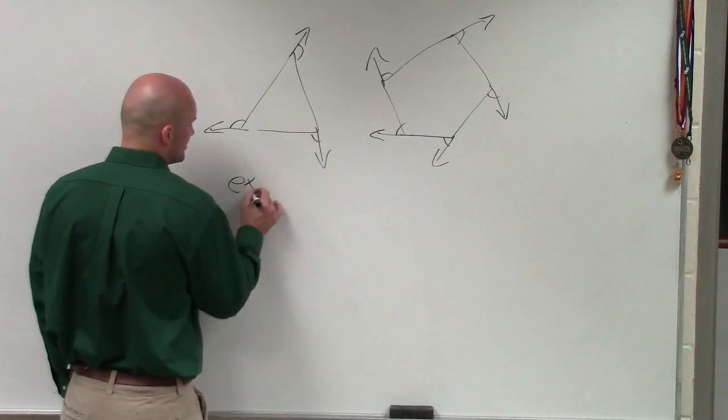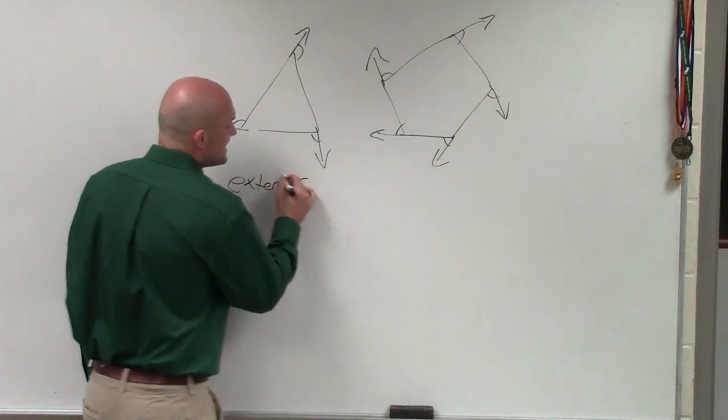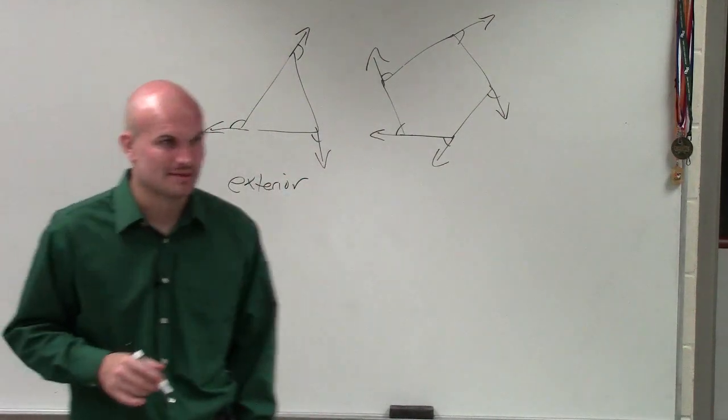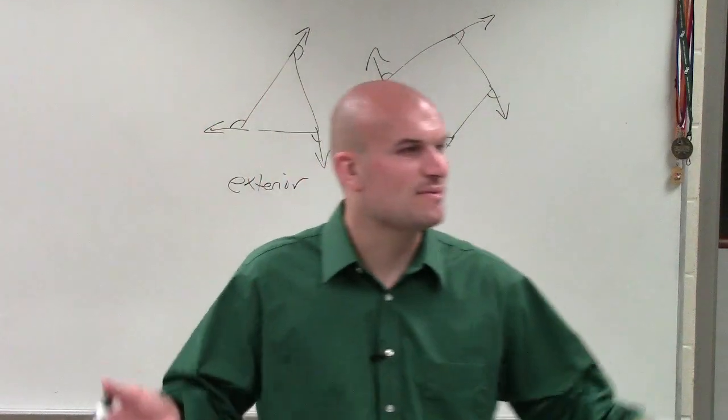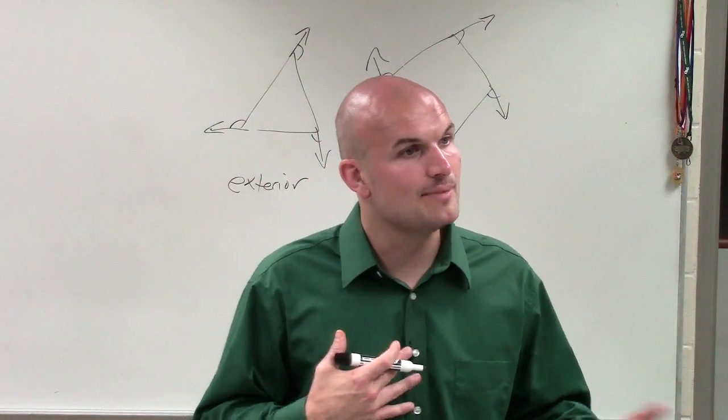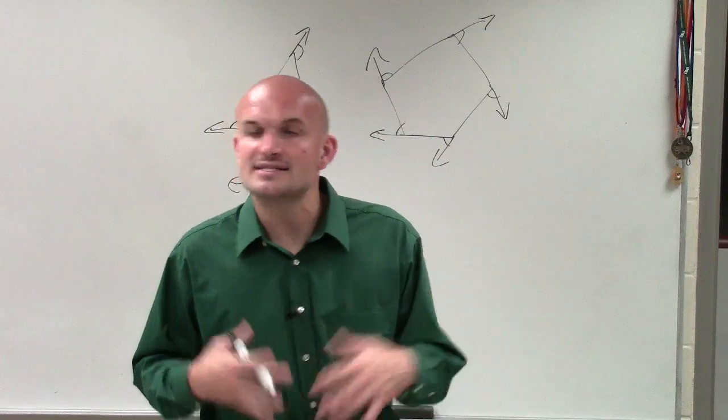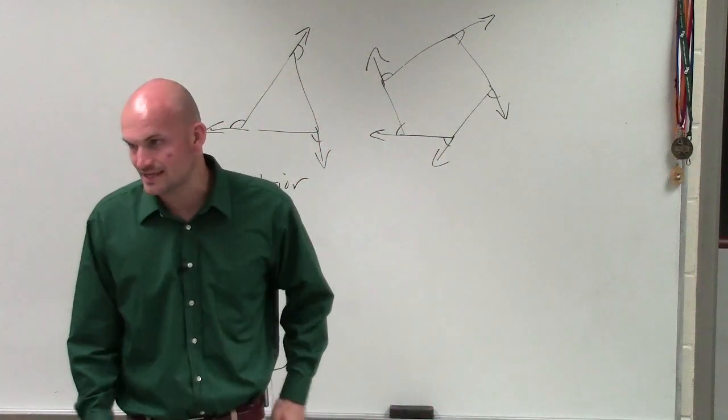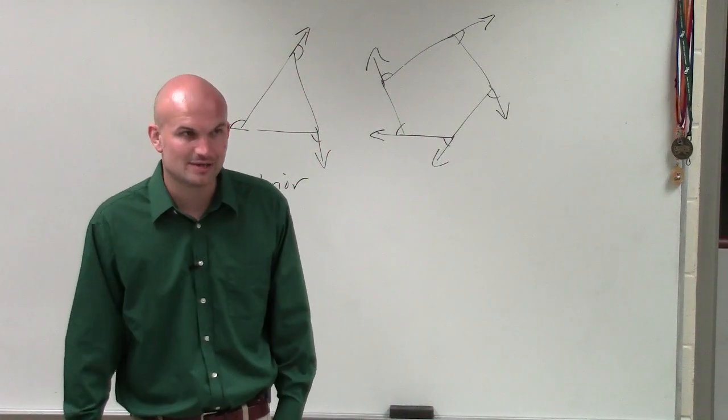So yes, it's going to be the exterior angles for any polygon, ladies and gentlemen. The difference, Megan, is when we have interior angles, that always depends on the number of sides. But for exterior angles, it's always going to be equal to 360. Always going to be equal to 360.